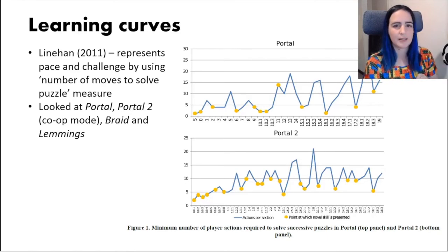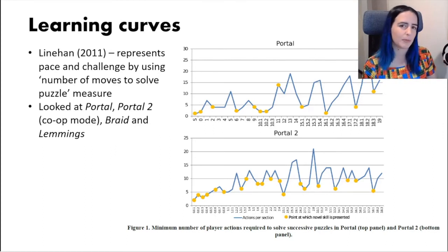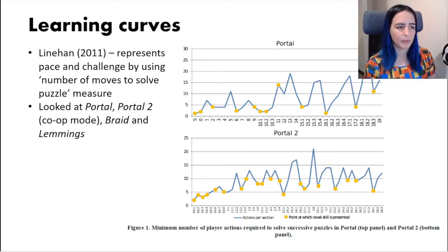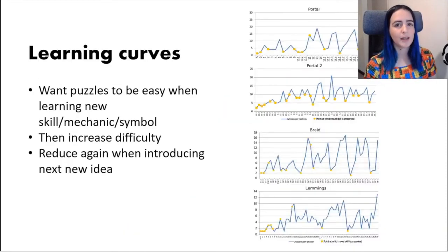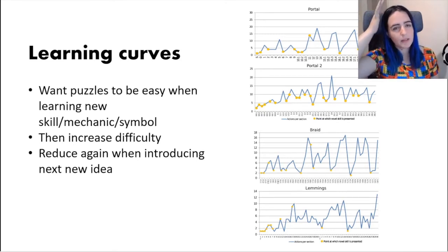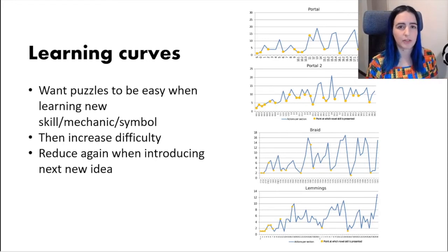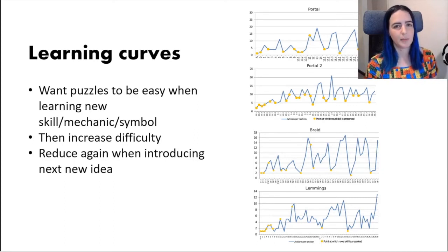I took Connor Linehan's work around representing the pace and challenge of games and tried to apply it to The Witness. They looked at Portal, Portal 2, Braid, and Lemmings, measuring challenge using the ideal number of moves required to solve each level. This shows a good map of difficulty across the games — starting quite easy, ending quite hard, with fluctuation in the middle. Each time a new skill is introduced, represented by yellow spots, you find a few easier puzzles there as well.